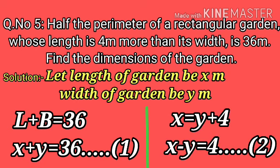For the second condition, the length is 4 metres more than the width, so x = y + 4, which gives x − y = 4. This is equation number 2. We will now solve these equations by the graphical method.